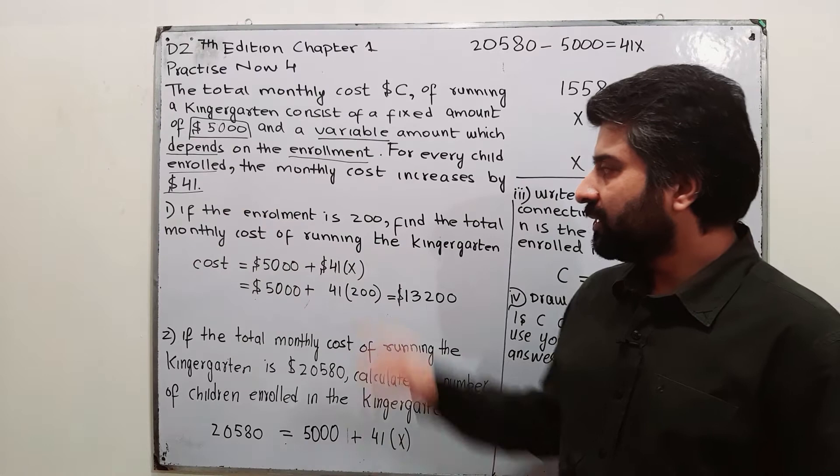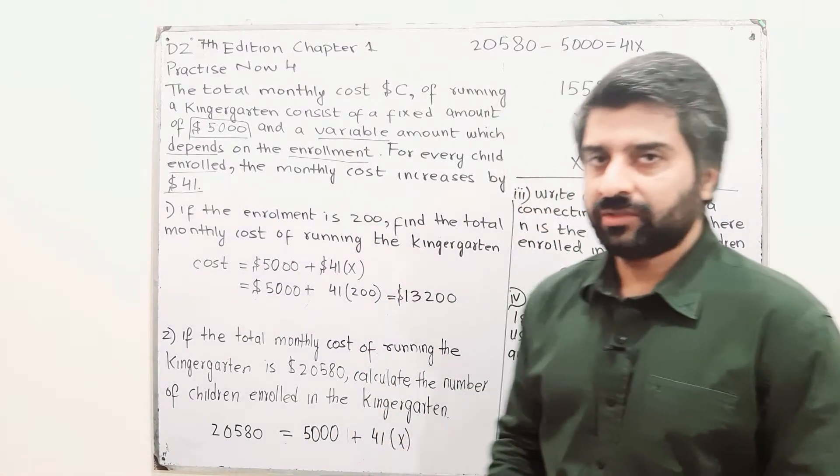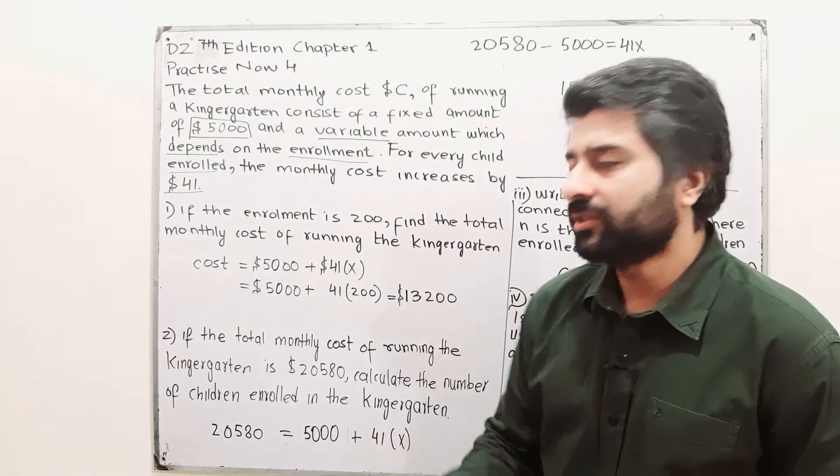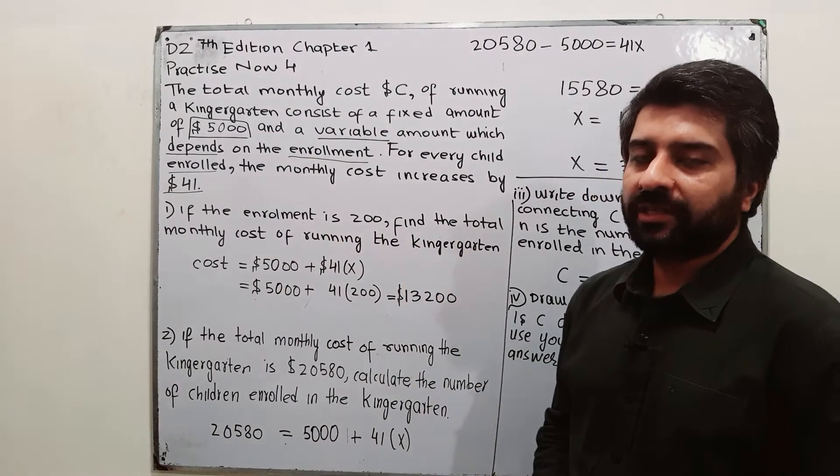Part number 1 is if the enrollment is 200. If the enrollment is 200, mean number of students are 200, find the total monthly cost of running the kindergarten.